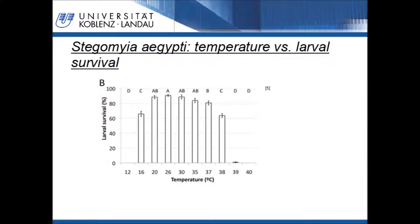analyzed the larval survival rate of the yellow fever mosquito in relation to the temperature in a lab test. The relationship between these two variables is visualized in the given diagram, whereby the survival rate is expressed in percent of the whole number of larvae. No larval survival is observed in trials with temperatures lower than 12 degrees Celsius and higher than 40 degrees Celsius. The highest survival rate can be observed at a temperature of about 26 degrees Celsius. In the cited publication, an equation for this relationship is not given. Such an equation is needed for further steps to model the quality of a location.